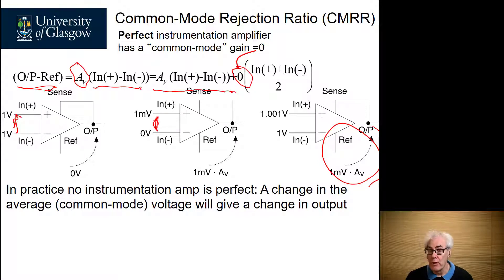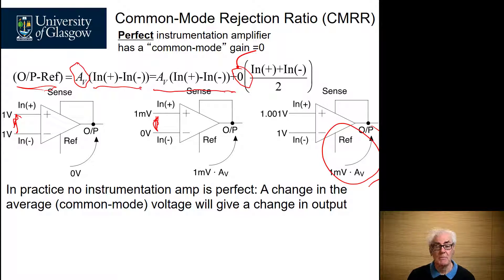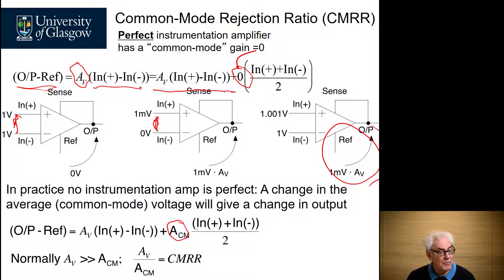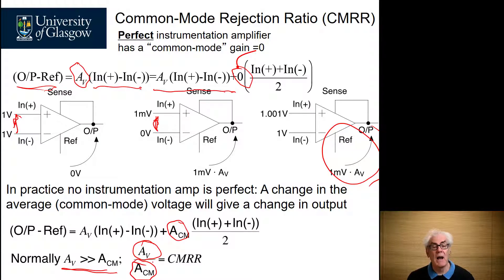Unfortunately, because we're dealing with real components and real amplifiers, we can never get a perfect instrumentation amplifier. A change in the common mode or average voltage at the input will always give rise to a change at the output. Our challenge is to design that change to be as small as possible while maintaining the differential output as large as possible. This gives rise to the concept of common mode gain, which is based on the average voltage. And in most instrumentation amplifiers, the differential gain would be much, much larger than the common mode gain. And we define a concept called common mode rejection ratio, which is the differential gain divided by the common mode gain.